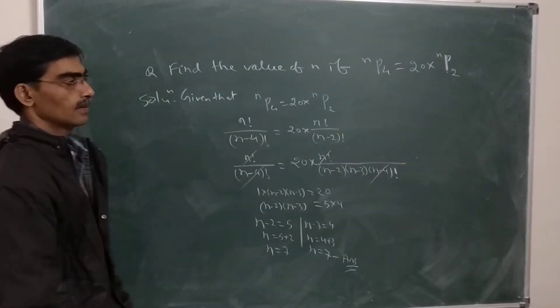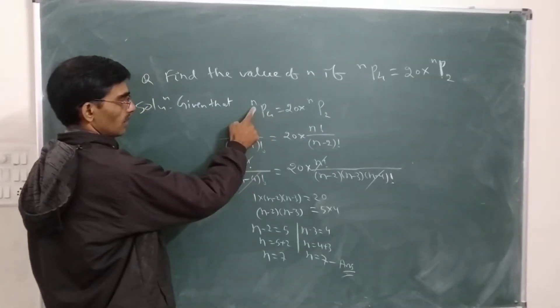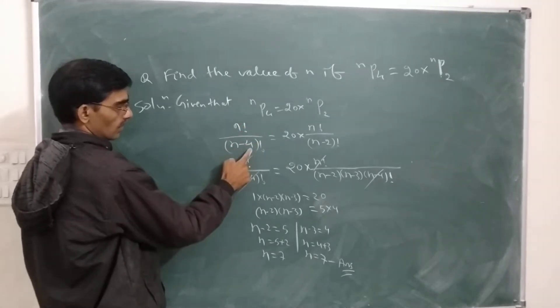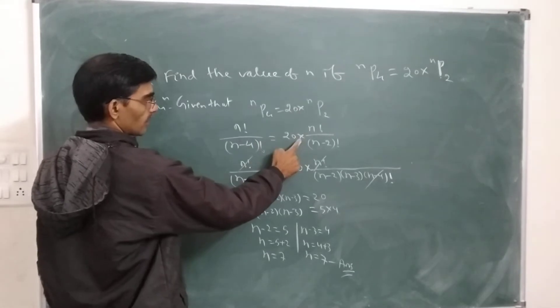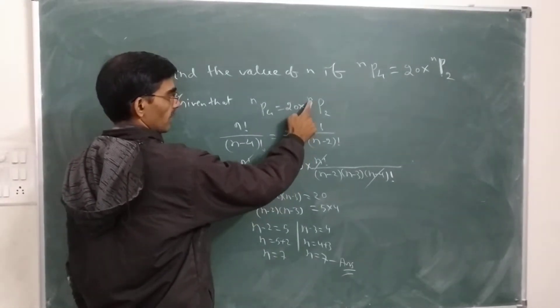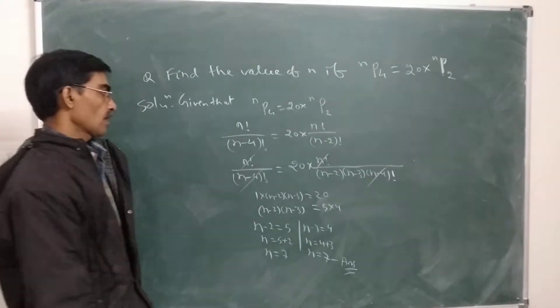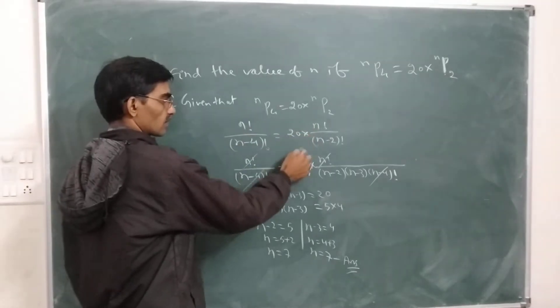If we want to find the value of N, let's arrange the syntax for N, P, R. So what can we write for NP4? Factorial N over (N minus R), that is (N minus 4) factorial, equals 20 multiplied by factorial N over (N minus R), that is (N minus 2) factorial. Let's see if we can simplify this.